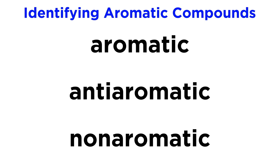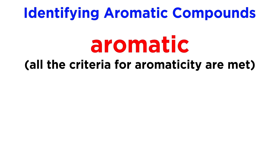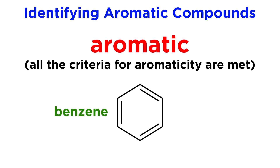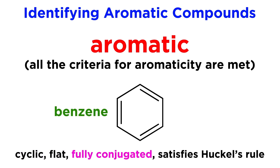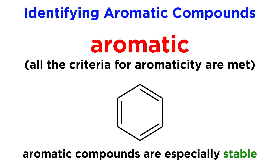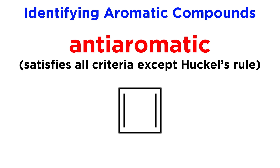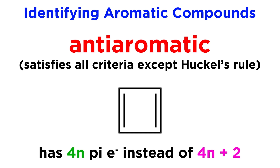So with these rules, we should be able to identify any molecule as being aromatic, anti-aromatic, or non-aromatic. If a molecule satisfies all of the criteria, it is aromatic — like benzene, which is cyclic, flat, fully conjugated, and has a number of delocalized pi electrons that satisfies Huckel's rule. Aromatic compounds are especially stable. If a molecule satisfies most of these criteria — in that it is cyclic, flat, and fully conjugated — but does not satisfy Huckel's rule, having a number of delocalized pi electrons equal to 4n instead of 4n + 2, it will be anti-aromatic.